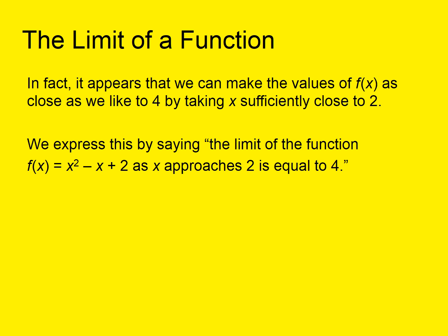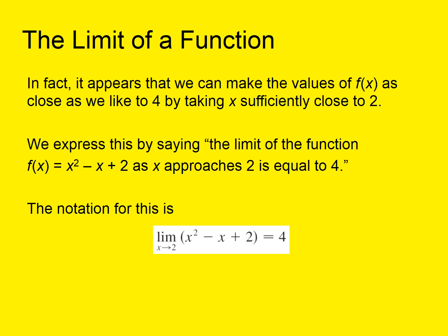We express this by saying: the limit of the function f(x) = x² - x + 2 as x approaches 2 is equal to 4. We can get y as close as we like to 4 by making x close enough to 2. The notation for this is: the limit as x approaches 2 of x² - x + 2 equals 4.